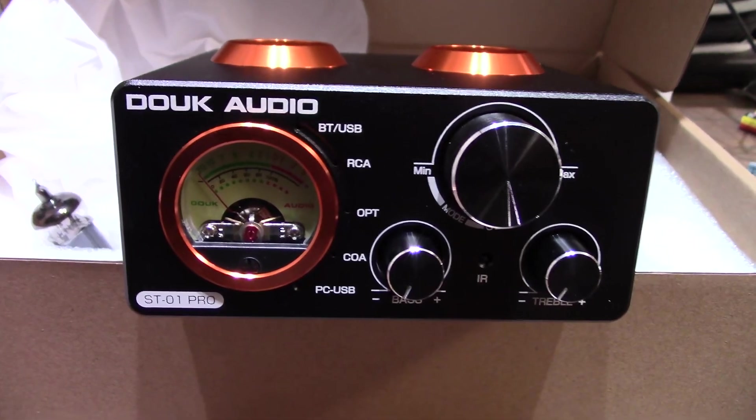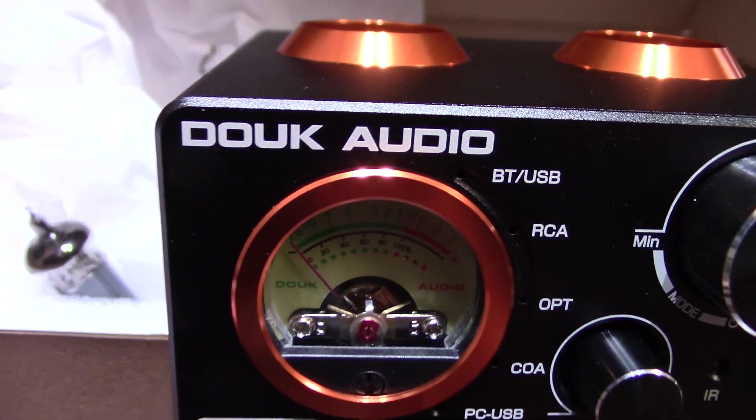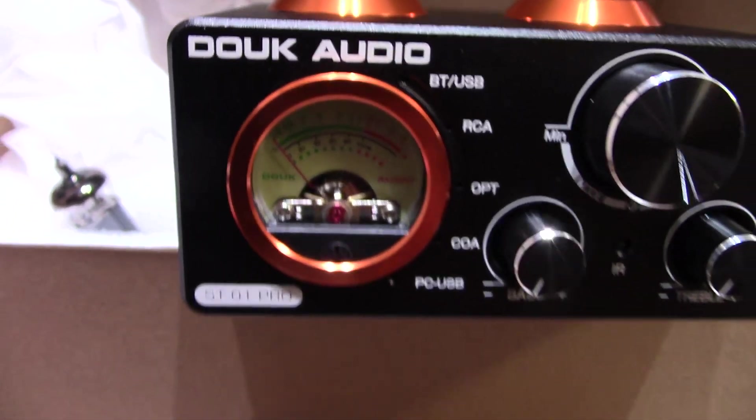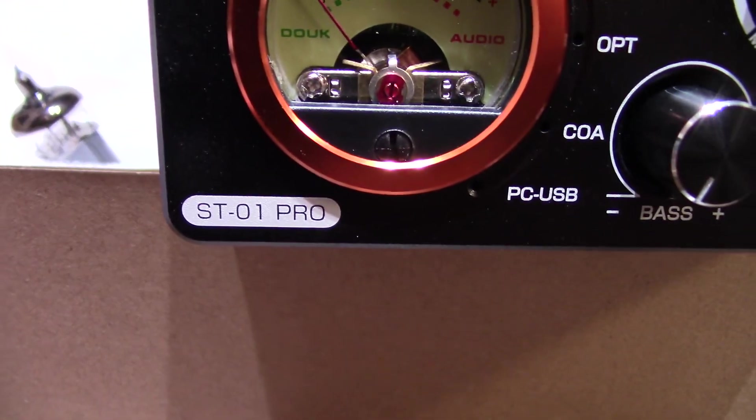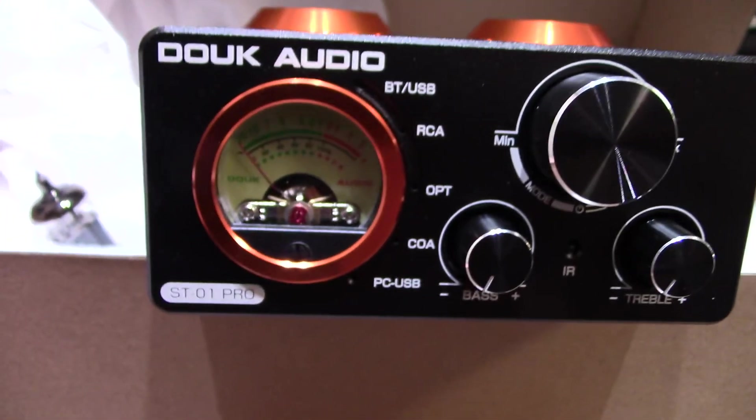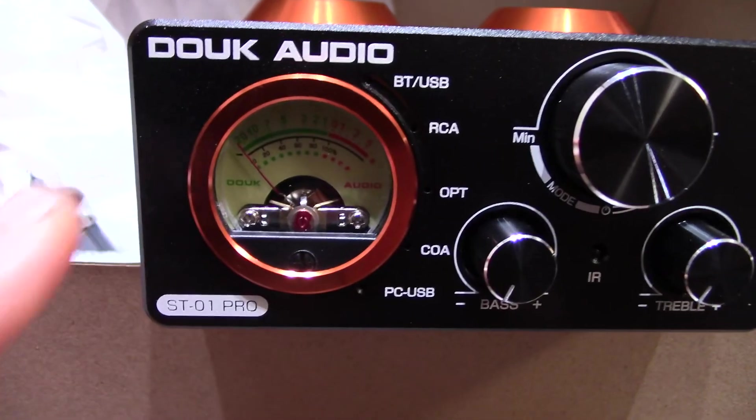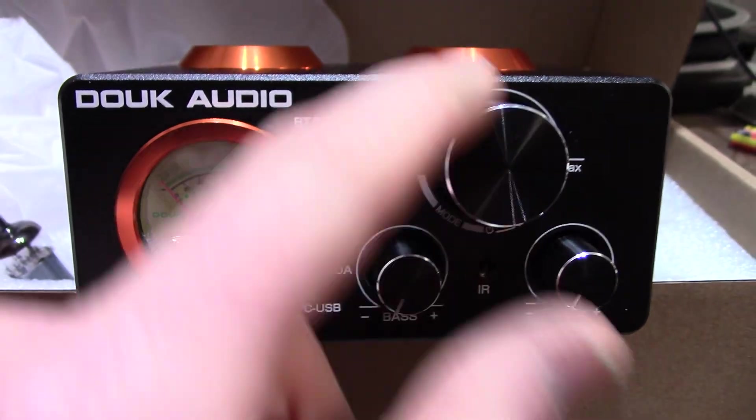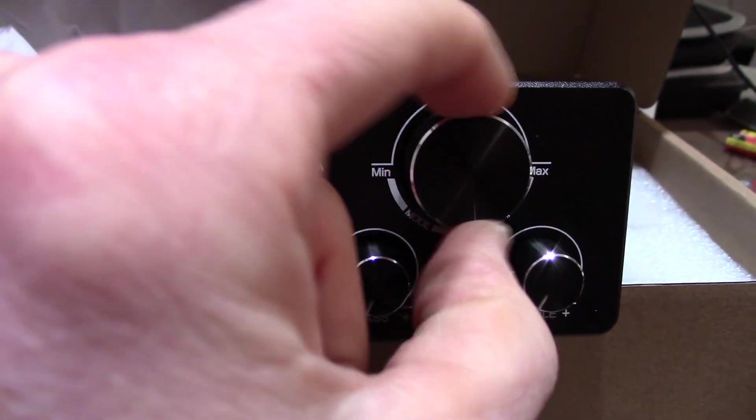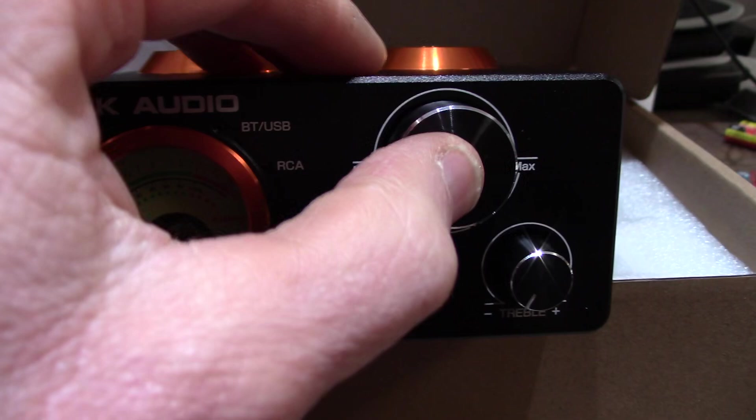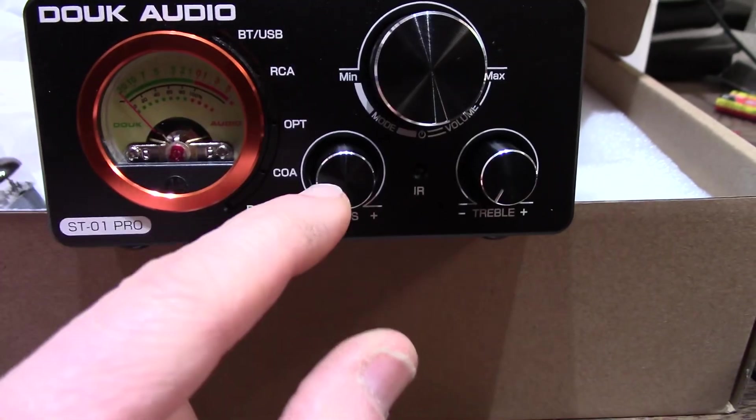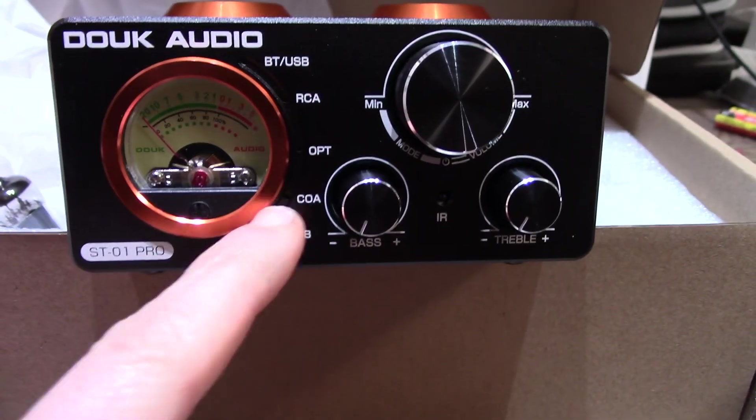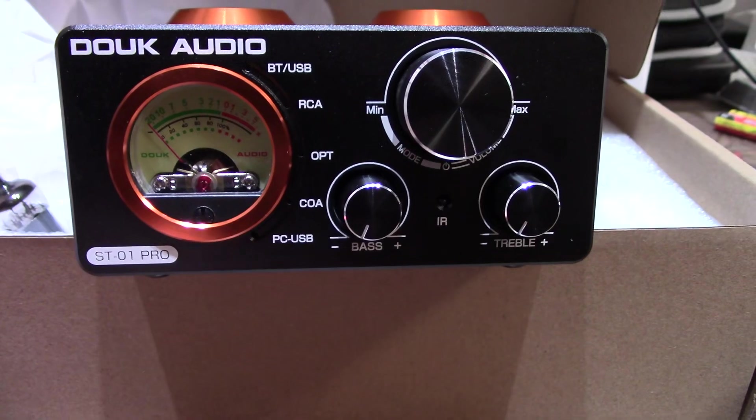Okay, so we have a DOUK. DOUK? I don't know how you pronounce that. Audio ST-01 Pro. So we got a neat little meter here. Volume. Seems to be an encoder wheel. Push button. We have tone controls. These look like they're indicator lights for the mode you're in.